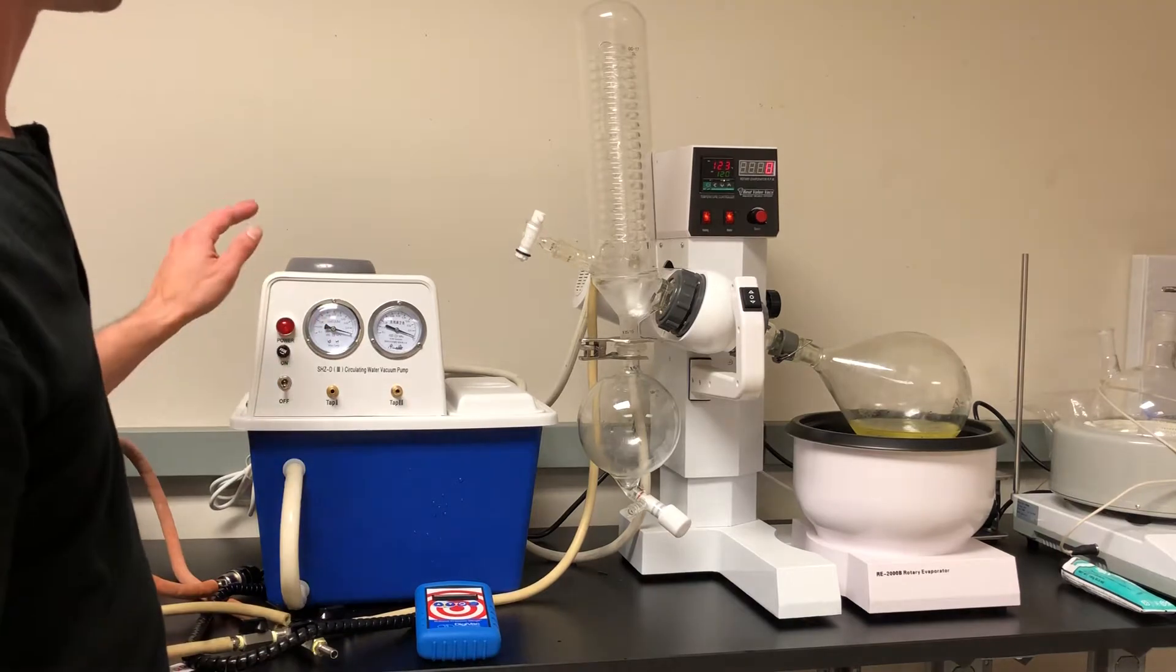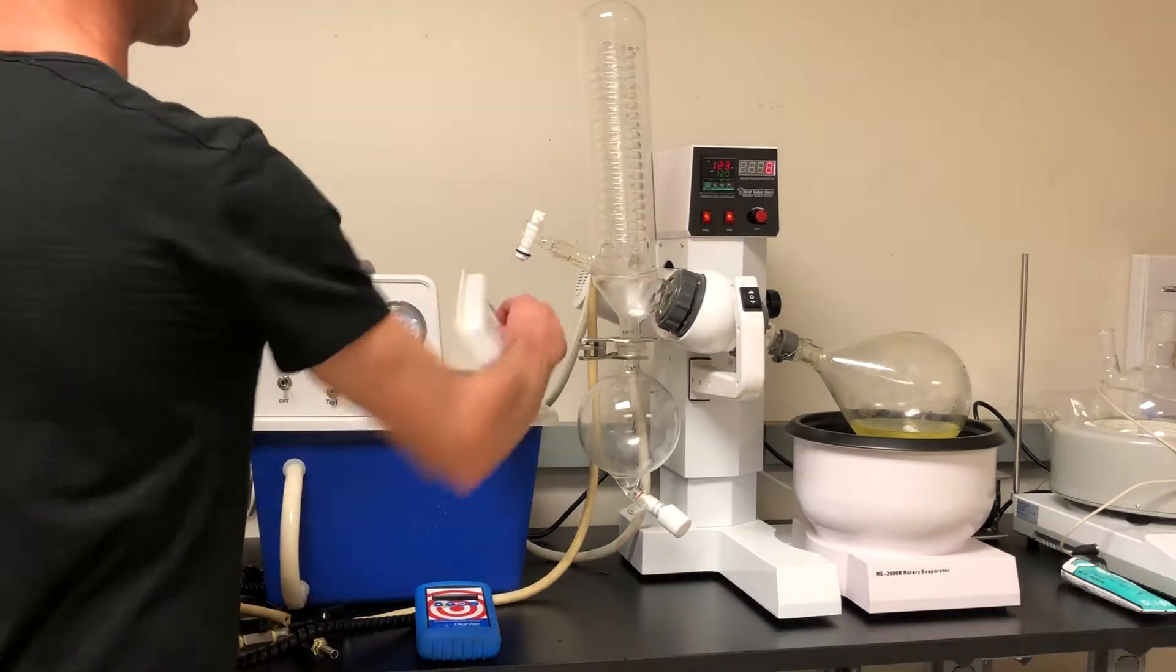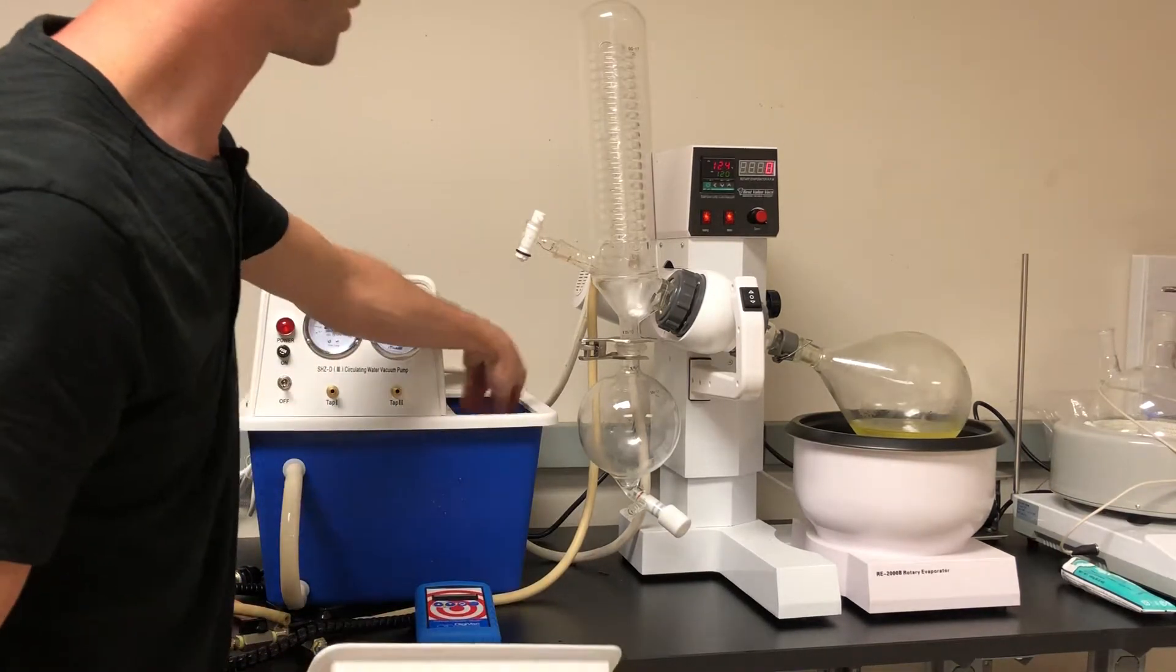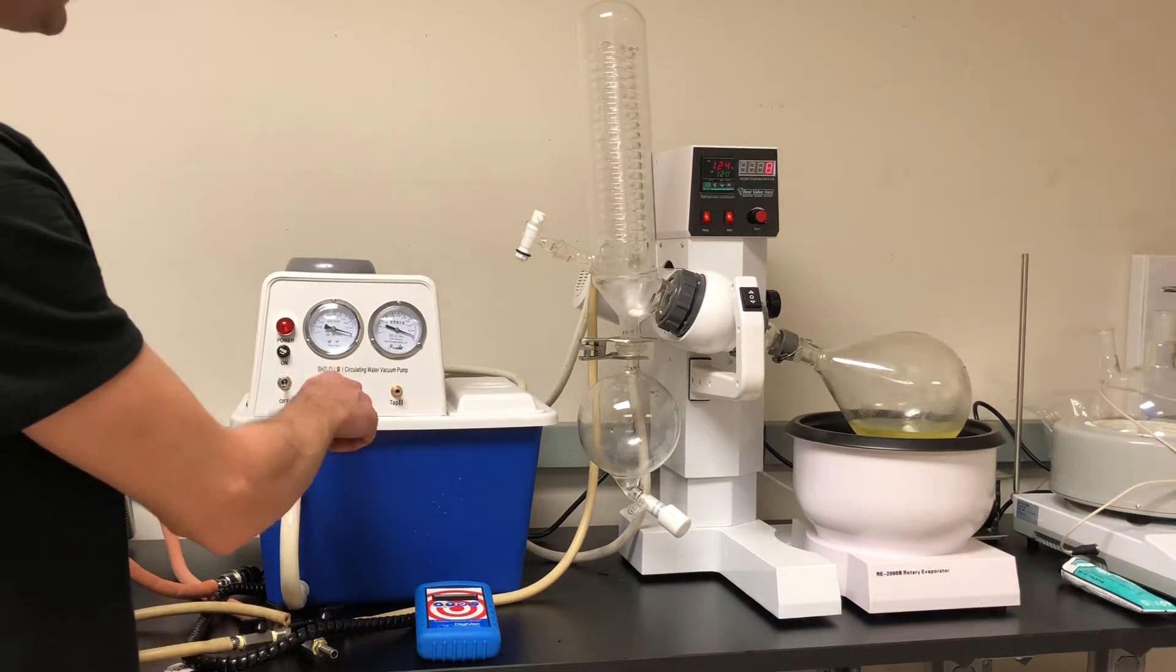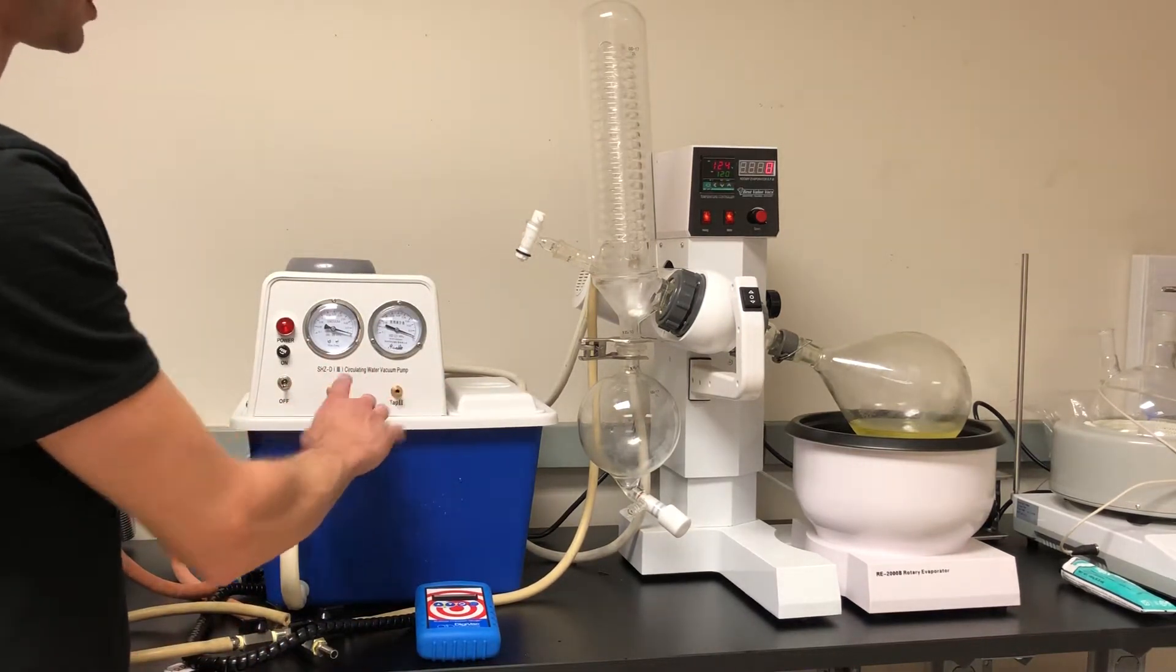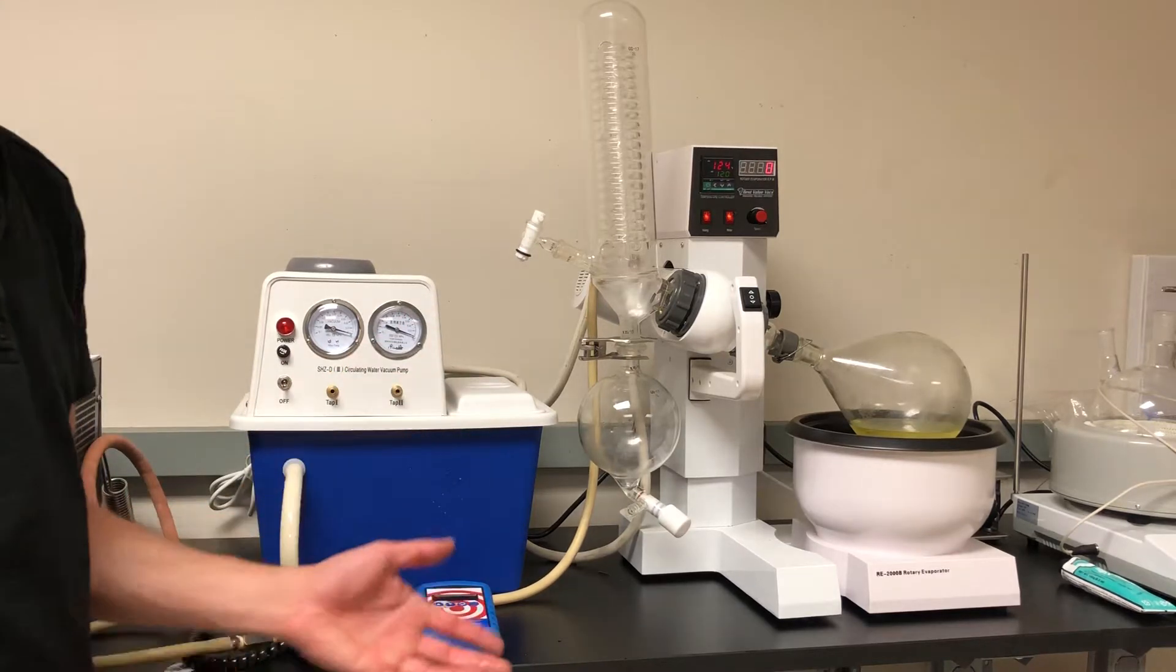I'll start with this is basically an ice bath. So you have your water circulating ice bath built into the bottom. There's a vacuum aspirator built into it. So you have two vacuum ports, two separate vacuum pumps, if you will, built into it.